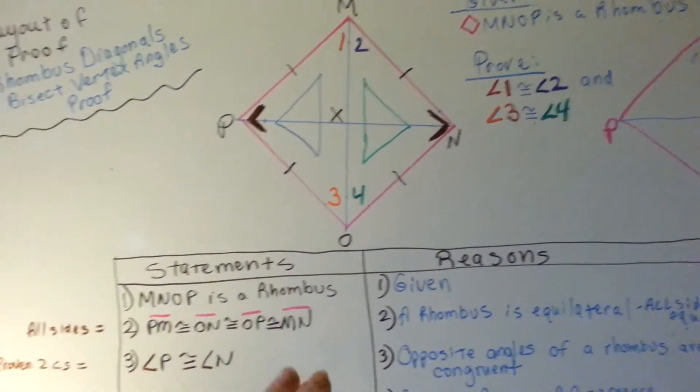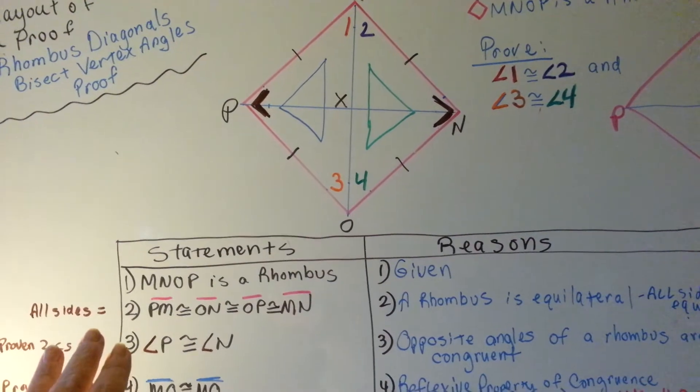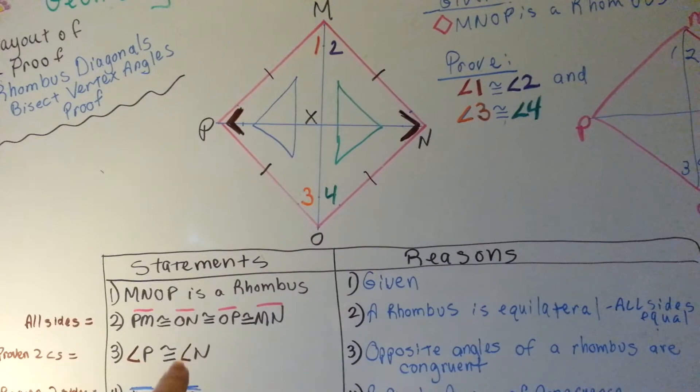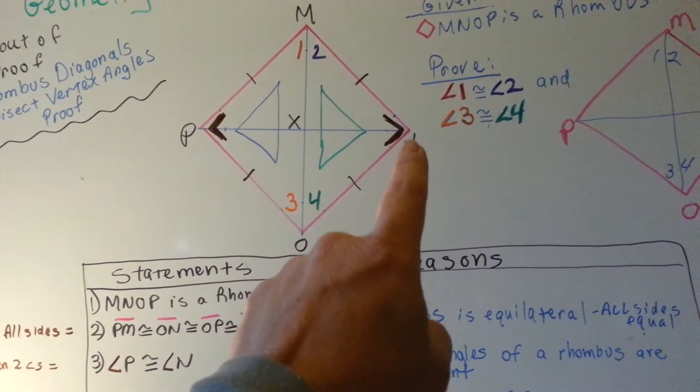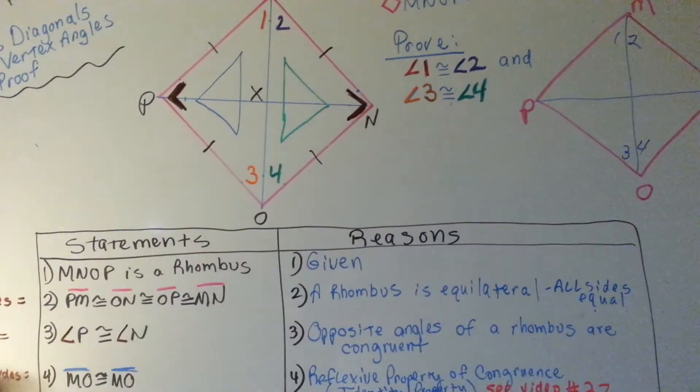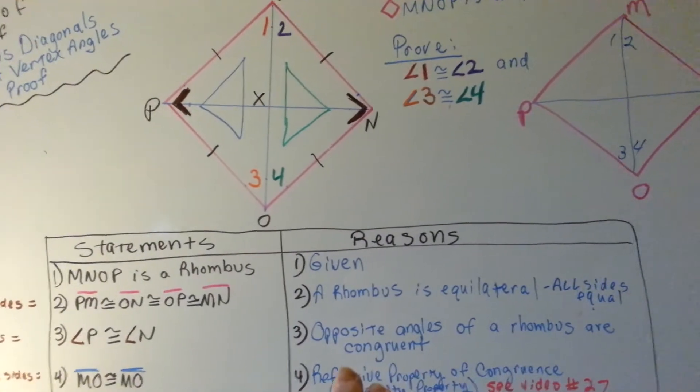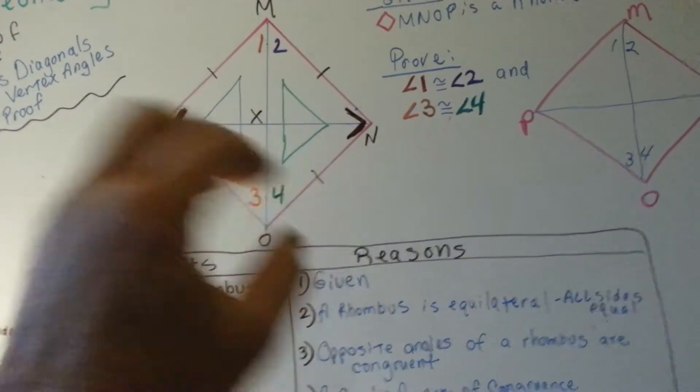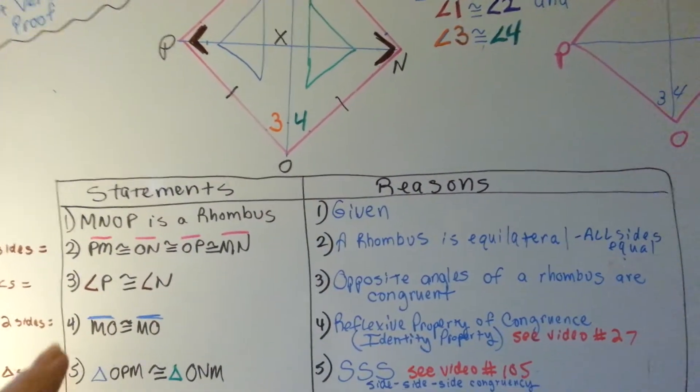Now we've said that, it's kind of understood. We can say that this brown angle P is congruent to that N because the opposite sides of a rhombus are congruent. If these are all congruent, these angles have to be congruent.